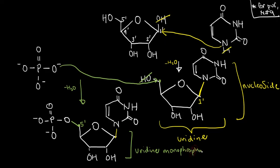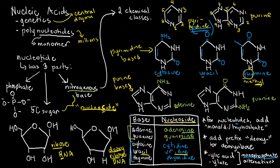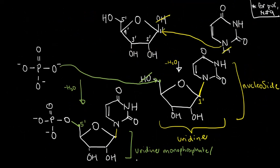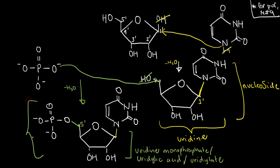Just to remind you, since we have uridine monophosphate, we can give it alternative names: we can call it uridylic acid, or even shorter, uridylate. Since this one already has a phosphate, this is now a full-fledged nucleotide, not just a nucleoside.